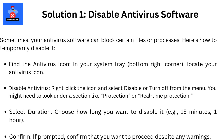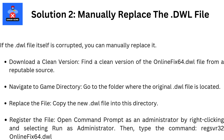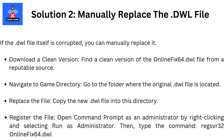Solution 2: Manually replace the .dwl file. If the .dwl file itself is corrupted, you can manually replace it. Download a clean version of the online fix 64 .dwl file from a reputable source. Navigate to the folder where the original .dwl file is located and copy the new .dwl file into that directory. Then register the file by opening Command Prompt as an administrator — right-click and select Run as Administrator — and type the command.